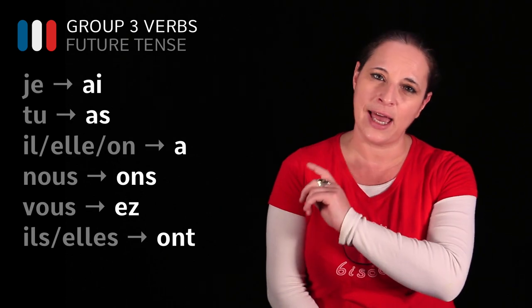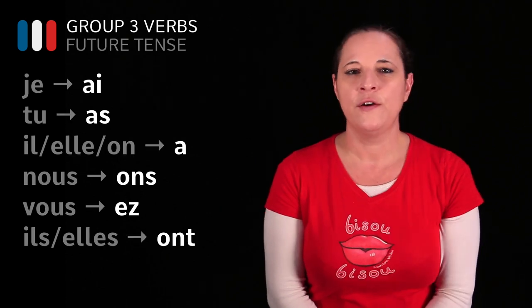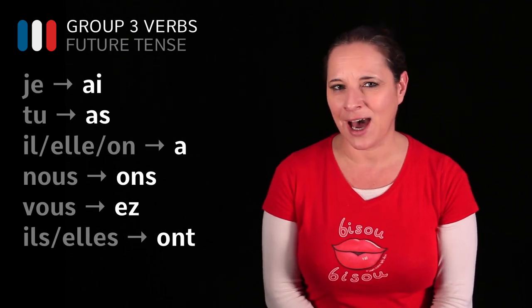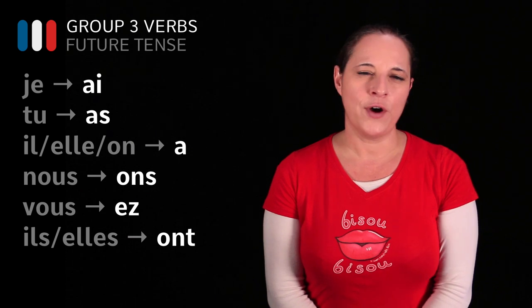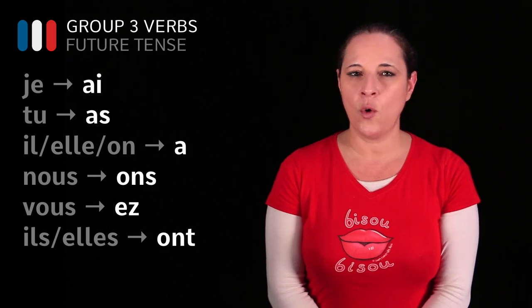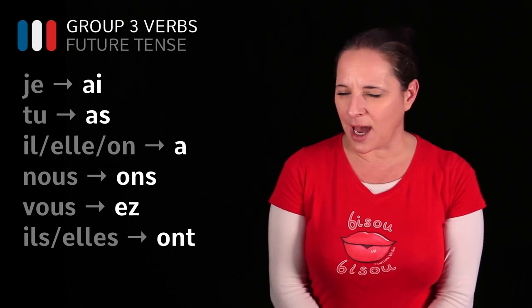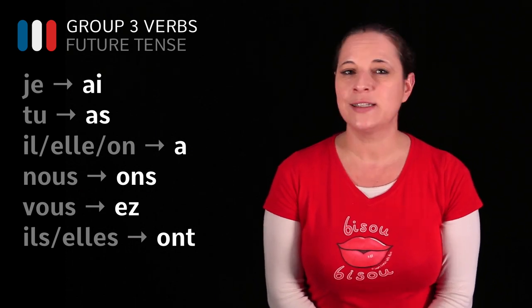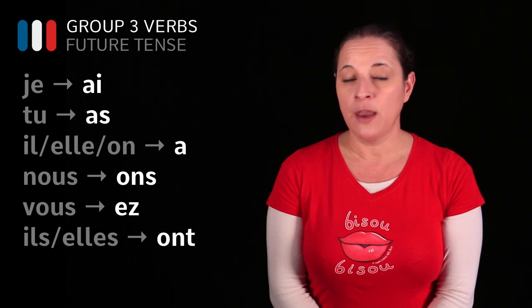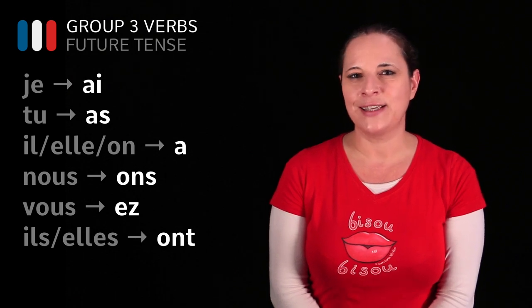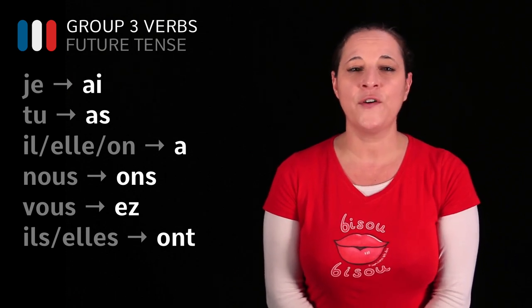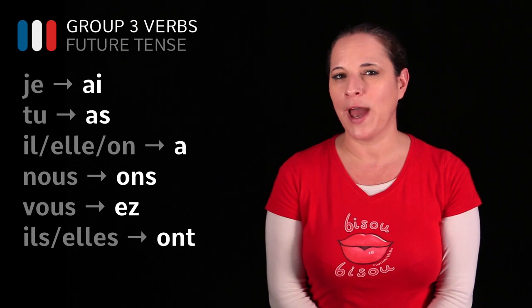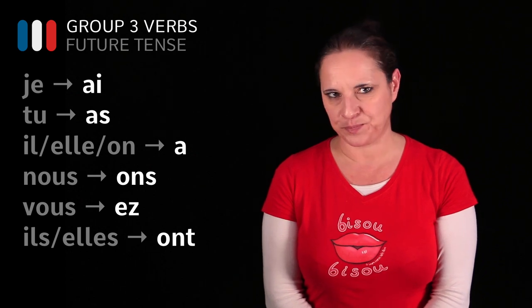For JE, it is -AI; for TU, it is -AS; for IL, ELLE, ON, it is -A; for NOUS, it is -ONS; for VOUS, it is -EZ; and for ILS and ELLES, it is -ONT.